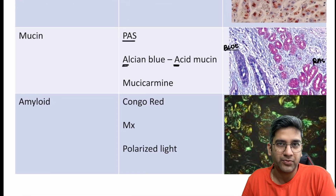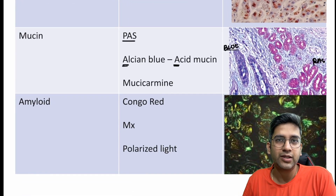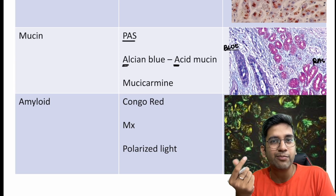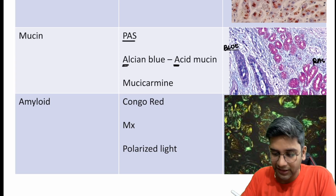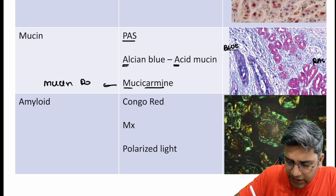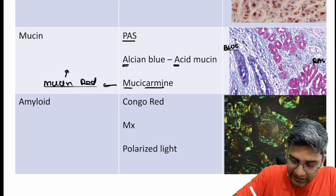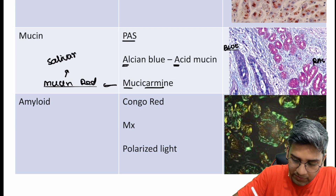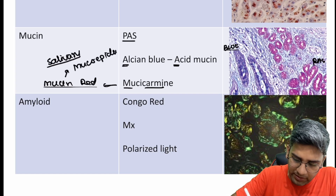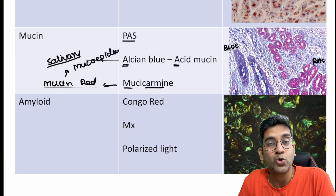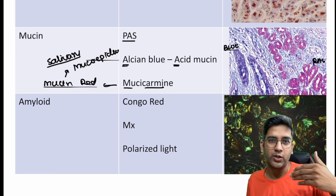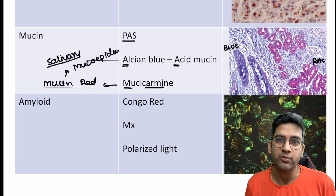There's one more stain called mucicarmine. It's also a stain useful for mucin — as the name says, 'musi' for mucin and carmine is a red color (like the carmine extract in gems packet, which gives red color). Mucicarmine stains mucin red. Mucicarmine is generally useful for salivary gland tumors — salivary mucins are beautifully stained by mucicarmine. Mucicarmine is also positive for a microorganism: the cryptococcal capsule will also be positive for mucicarmine.